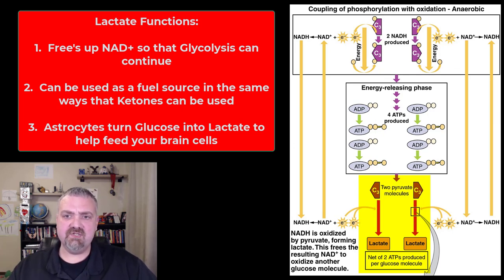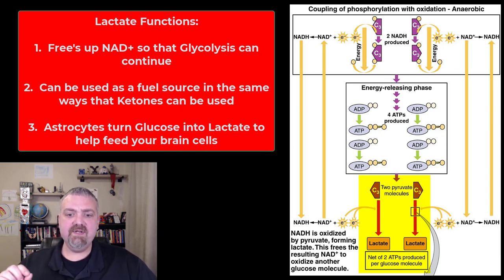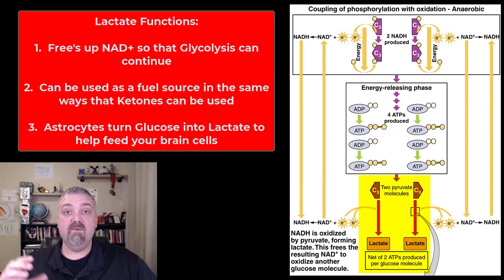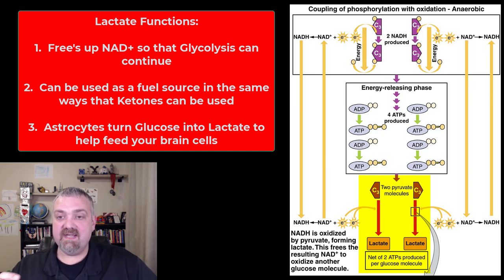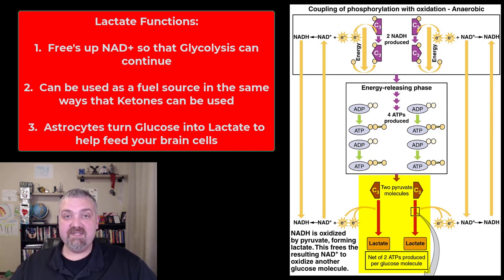Number one — why did we turn pyruvate into lactate in the absence of oxygen? The key is that you're actually recycling NAD. Big picture: if you didn't do this, it frees NAD so it can go back and oxidize other glucose. So if you didn't produce lactate, glycolysis would shut off and we wouldn't have any energy. In a low oxygen environment, we make a little bit of energy during glycolysis, and then we spare those NADs so they can go back and make a little bit more if we still don't have enough oxygen.